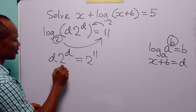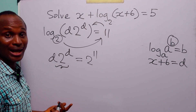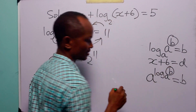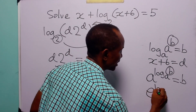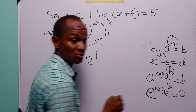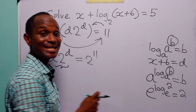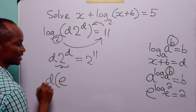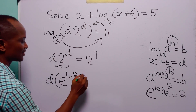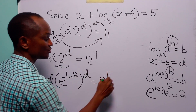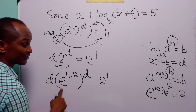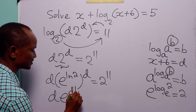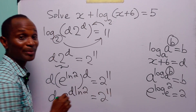The next step is to rewrite 2 in terms of the Euler number e. Remember that a to the power log base a of b is equal to b. So e to the power log base e of 2 equals 2. Since log base e is the natural logarithm ln, we can write this as e to the power ln 2. We still have the exponent d, giving us d times e to the power d times ln 2 is equal to 2 to the power 11.